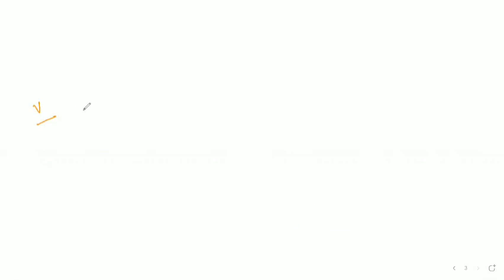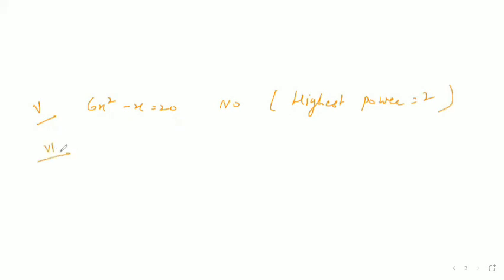Fifth part: 6x² − x = 20. No, it is not a linear equation in one variable because the highest power is 2. Sixth part: p² + p = 2. Is it a linear equation in one variable? No, because the highest power is also 2.